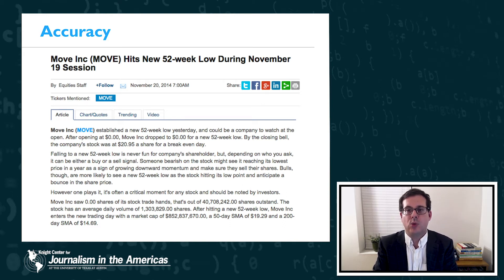Now I wanted to show you this example to point out one potential area where automation can still make errors. In this example we see the implications of an algorithmic writer not understanding context. So it says, Move Inc. established a new 52-week low yesterday and could be accompanied to watch at the opening. After opening at $0.00, Move Inc. dropped to $0.00 for a new 52-week low. So clearly this text doesn't make any sense. The system has missed an important bit of context, which is that Move Inc. was actually delisted from the stock exchange. And when a stock is delisted, its share price is shown as zero. But the system didn't understand the concept of delisting, and so it still generated a story that ended up being nonsensical.